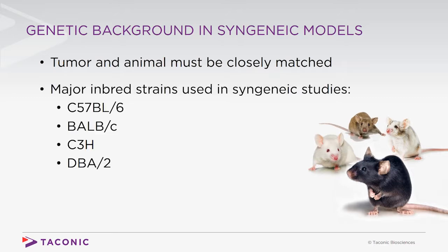To accomplish this, tumor cell lines have been derived from a variety of inbred strains, each with defined homogeneous genetic backgrounds. The most common strains for syngeneic models are listed here. Care should be taken that mice used are on a pure genetic background, including genetically engineered models.